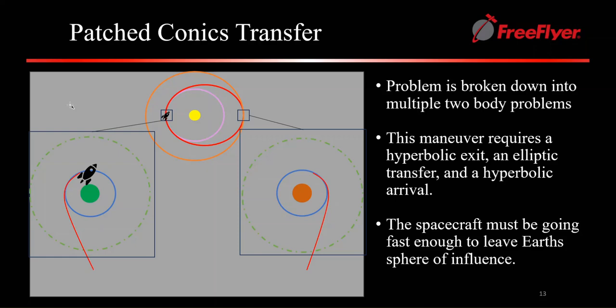It also considers the spheres of influence, which are represented here in green. These are the areas around celestial bodies where the gravitational pull is significantly stronger than that of other bodies.